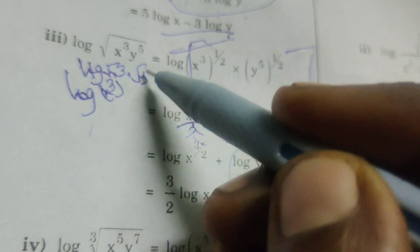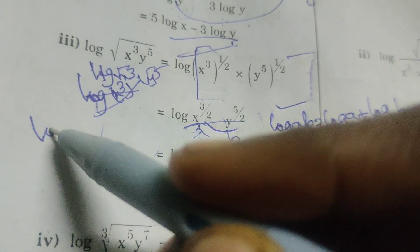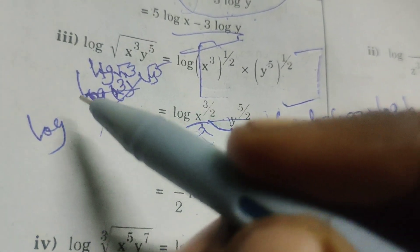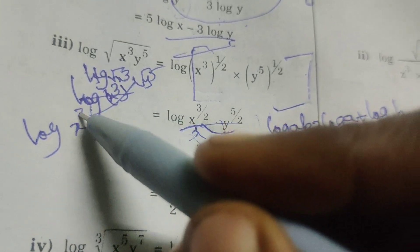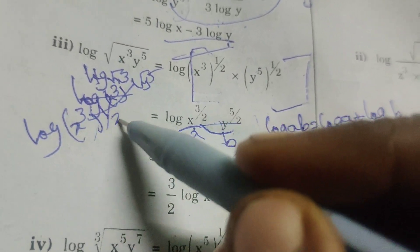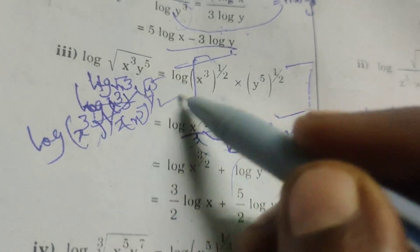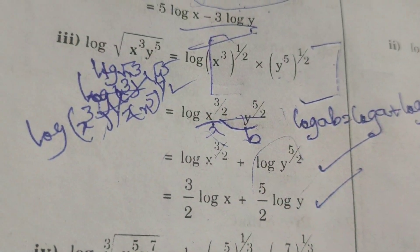That is log x cube whole power half, y power 5 whole power half. Okay, thank you.